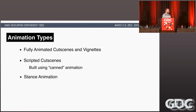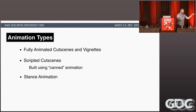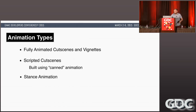We had three main animation types: fully animated cutscenes, which are all hand-animated, and vignettes — fully animated cutscenes with no camera, using the game camera, with gameplay still going on but characters doing something in the background. We also did scripted cutscenes built using what we called canned animation — pre-authored animation. And then stance animations, which included breathing cycles and locomotion.